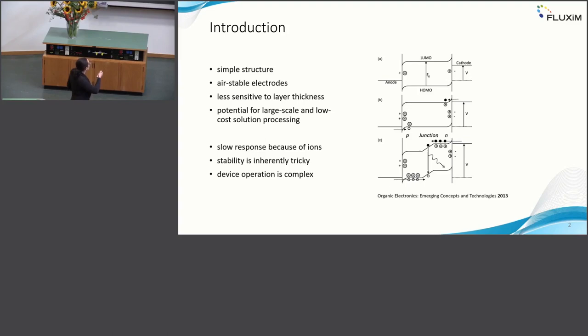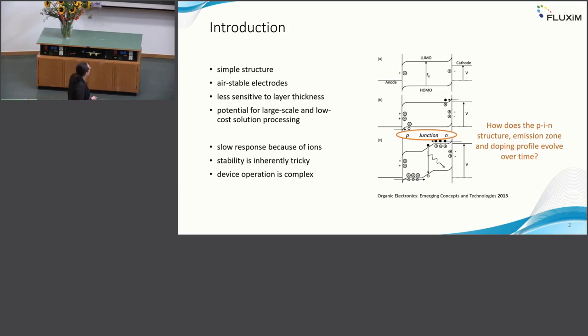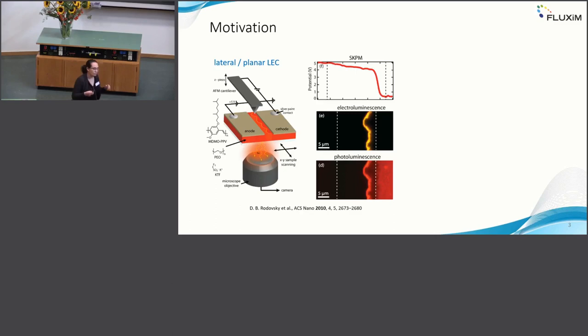Mainly this last point: you have this p-i-n junction that is inherently formed, and this determines your device performance. It's important to find out how this looks like. So the topic of today's talk will be how can we determine this p-i-n structure, the emission zone, and the doping profile over time in such a running device.